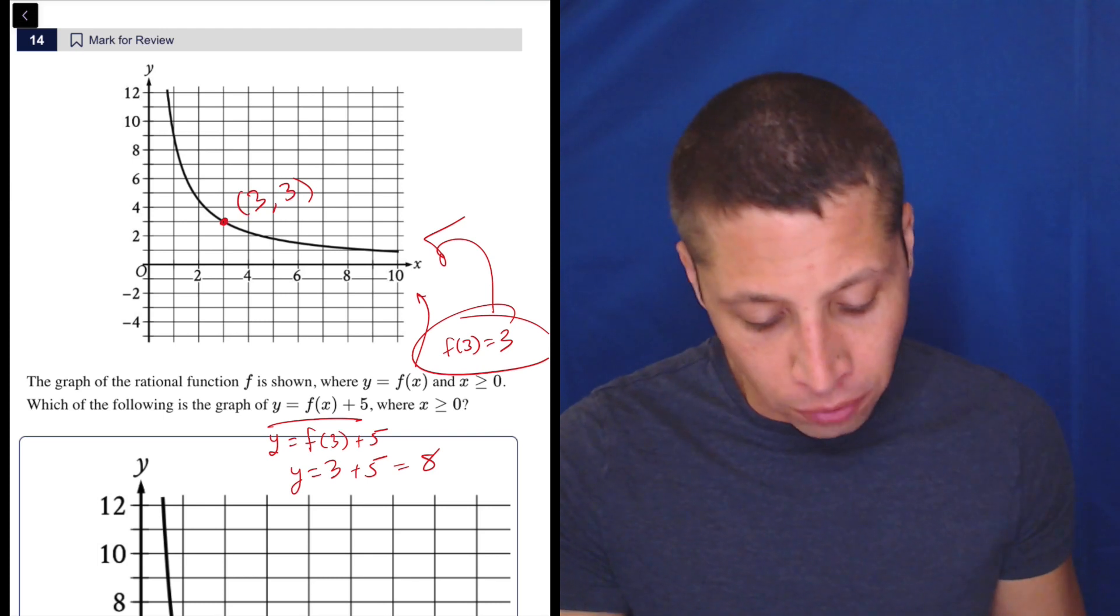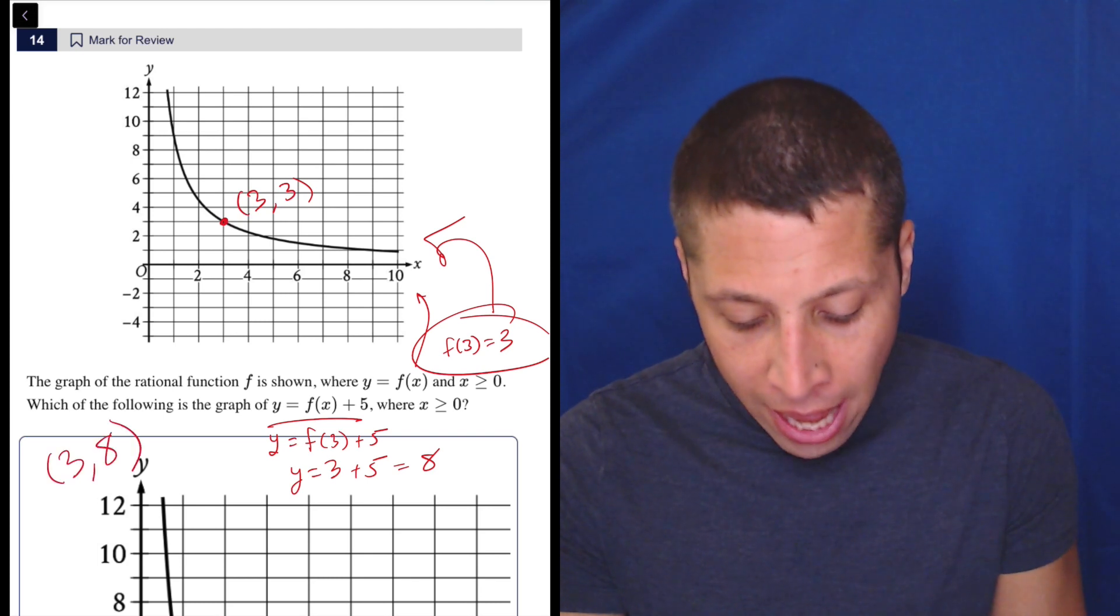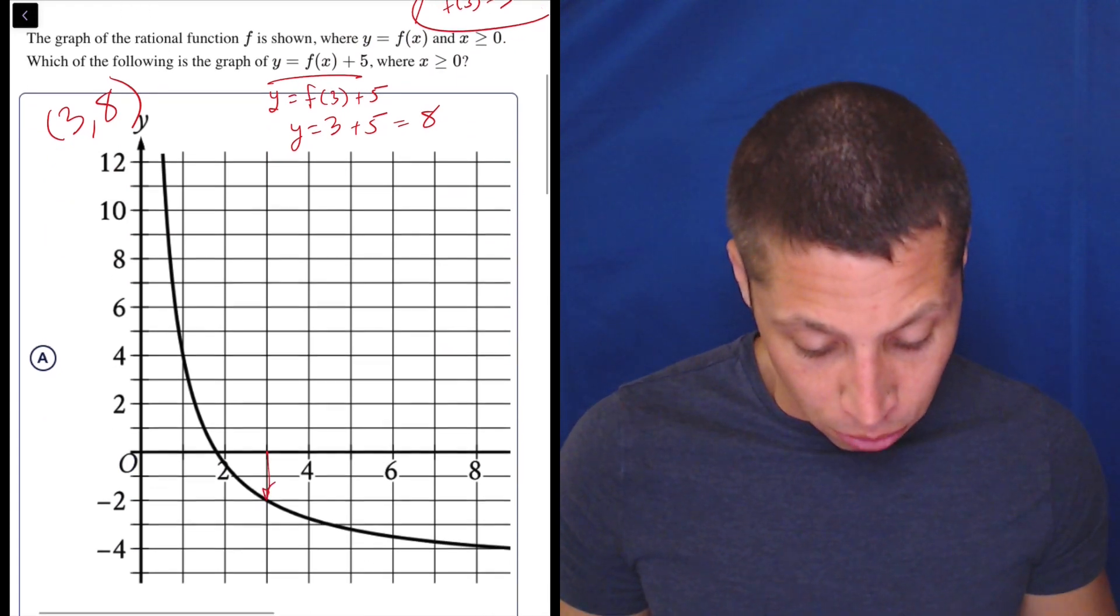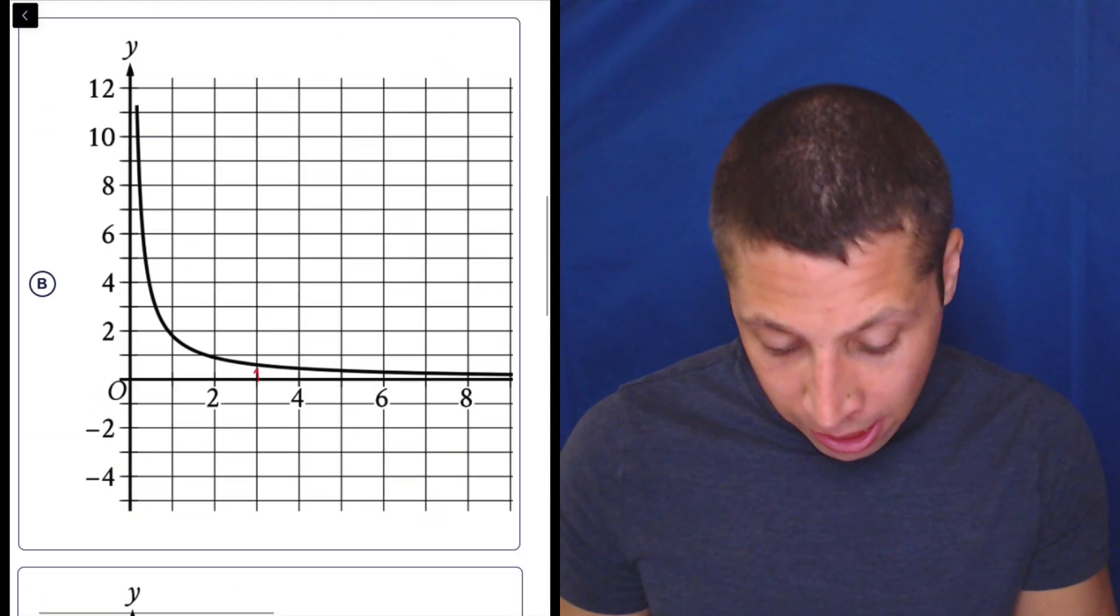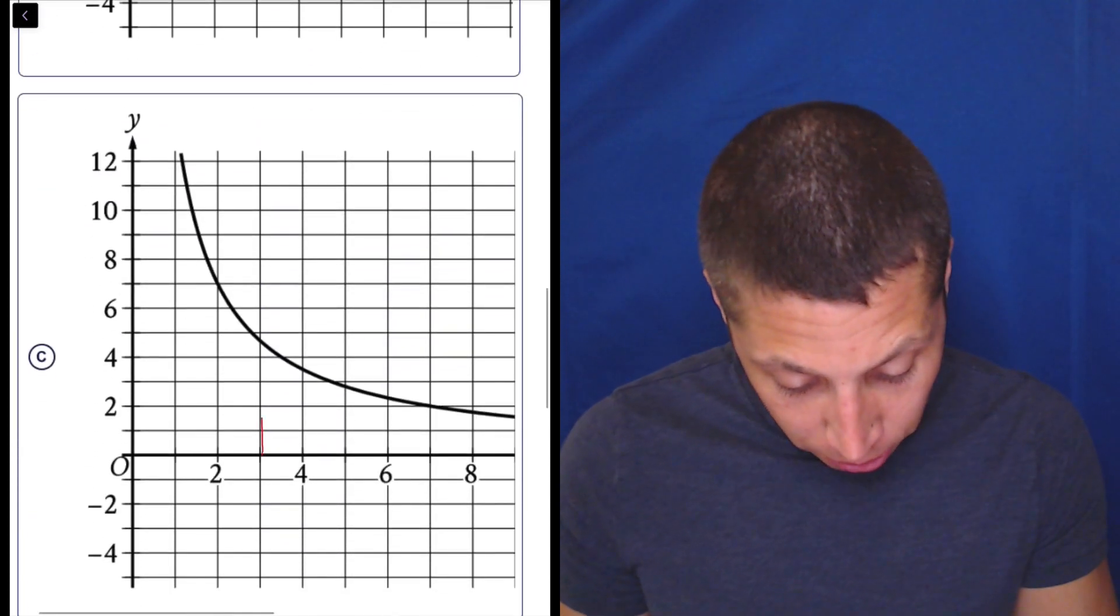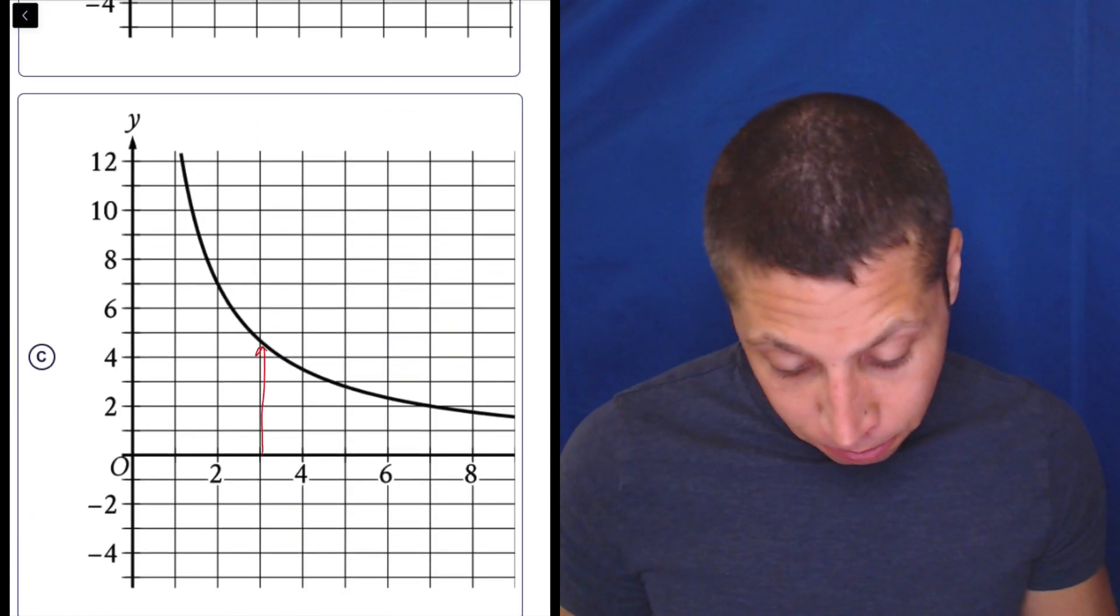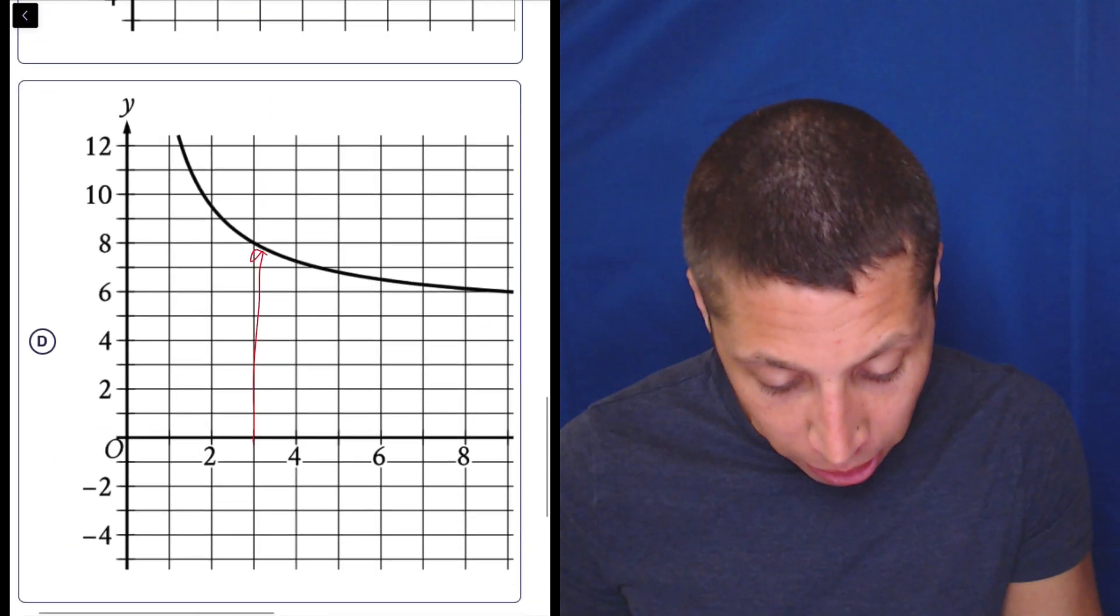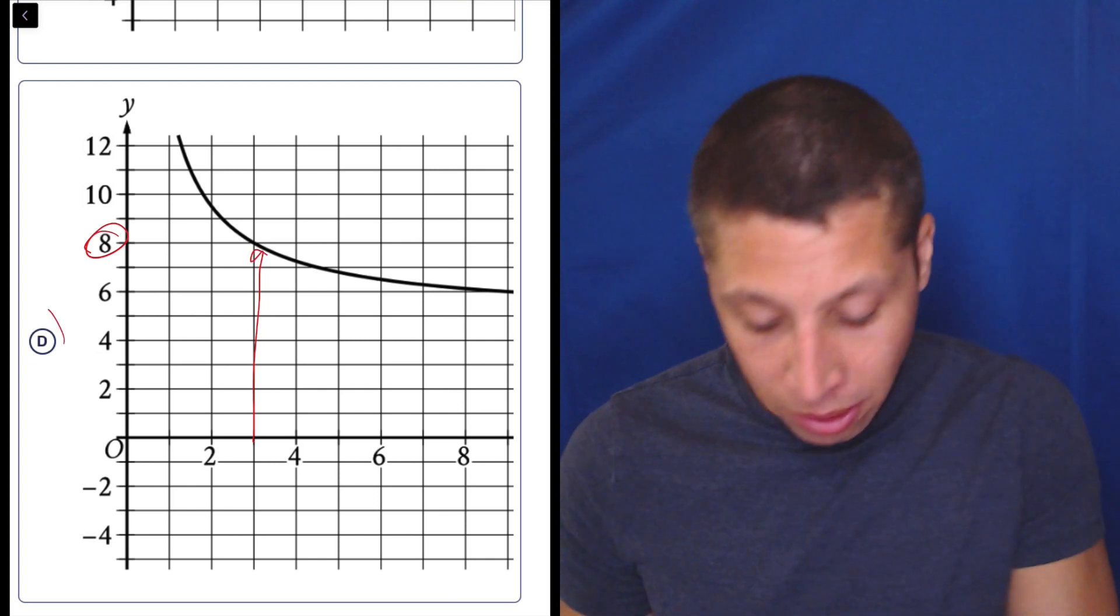So now we're looking for the point on the shifted graph of 3, 8. So let's see. 3, 8? No. 3, negative 2? So that's no good. 3, I don't know what that is. Less than 1. Doesn't work. Here we've got 3, and we've got, I don't know, 4 and change, 4 and a half, something like that. And then here we have 3. If we go up, it's 8. So it's definitely D.